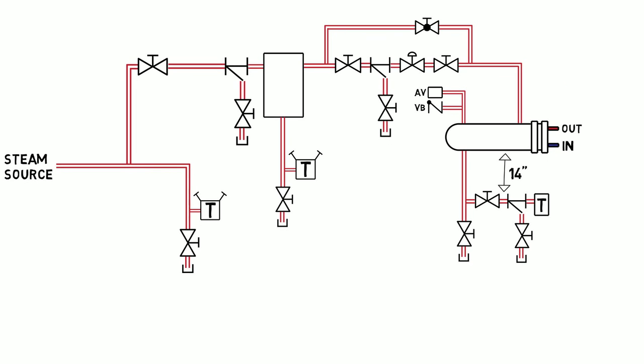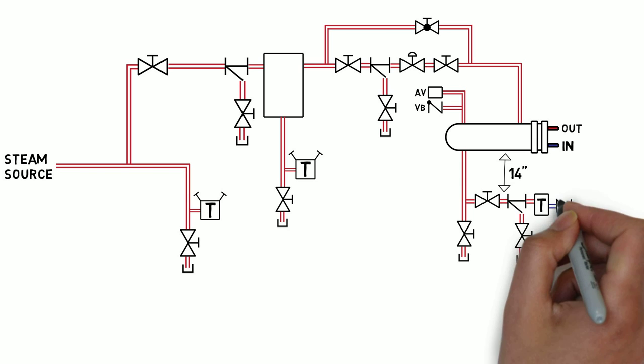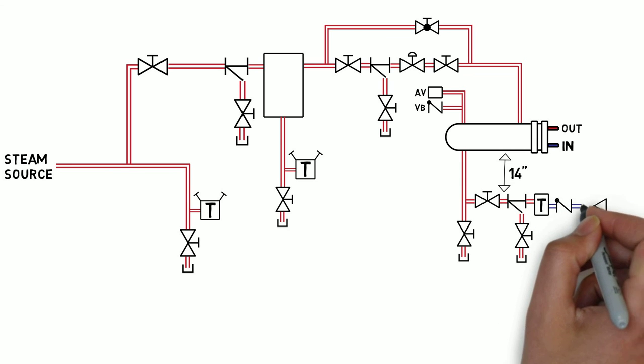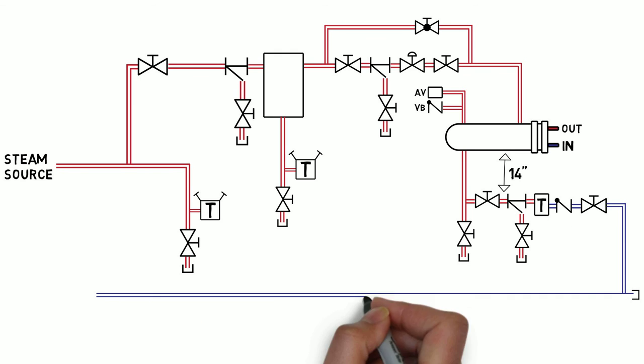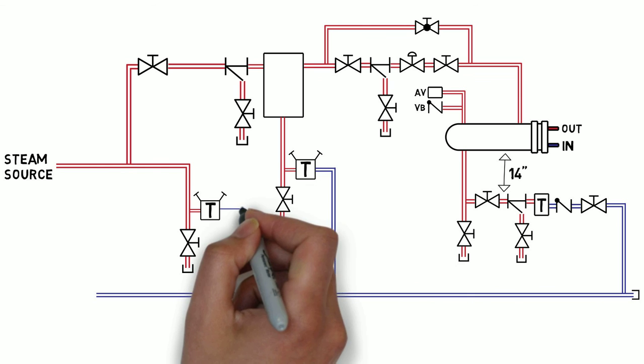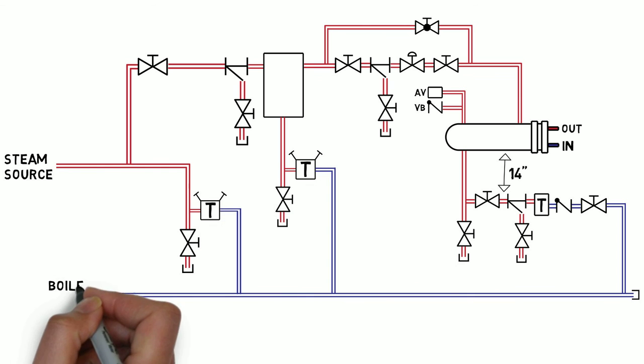After the steam trap, the condensate goes through a check valve and an outlet isolation valve. This condensate is piped horizontally and down to an atmospheric condensate return line, which picks up the discharge from the other steam traps and then returns to a condensate pump system or directly back to the boiler room.